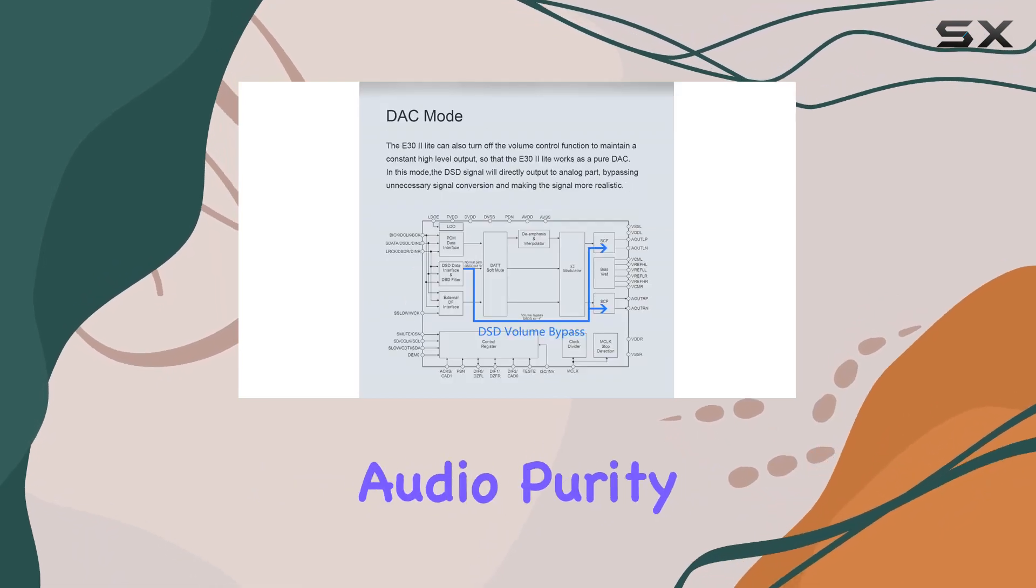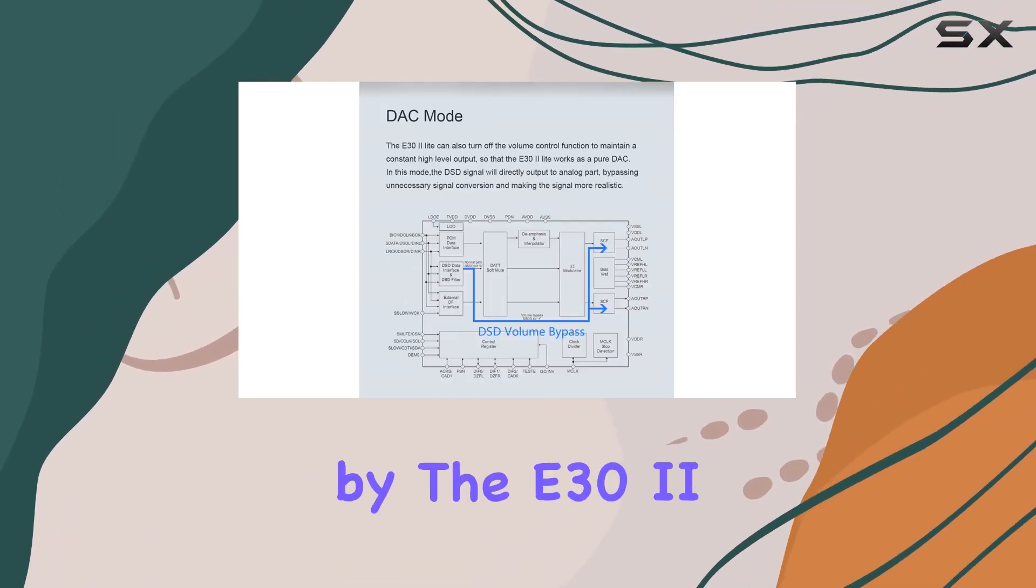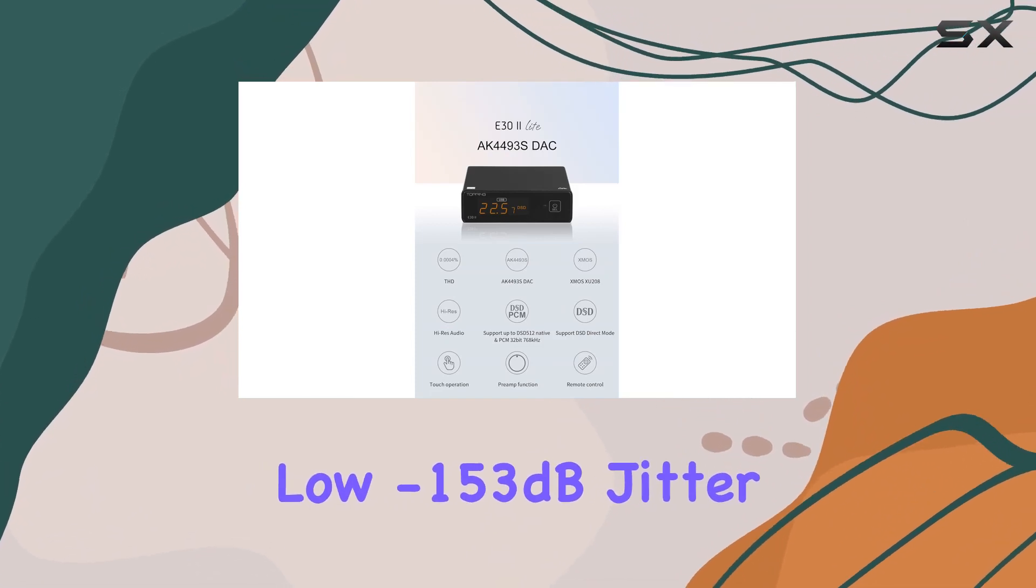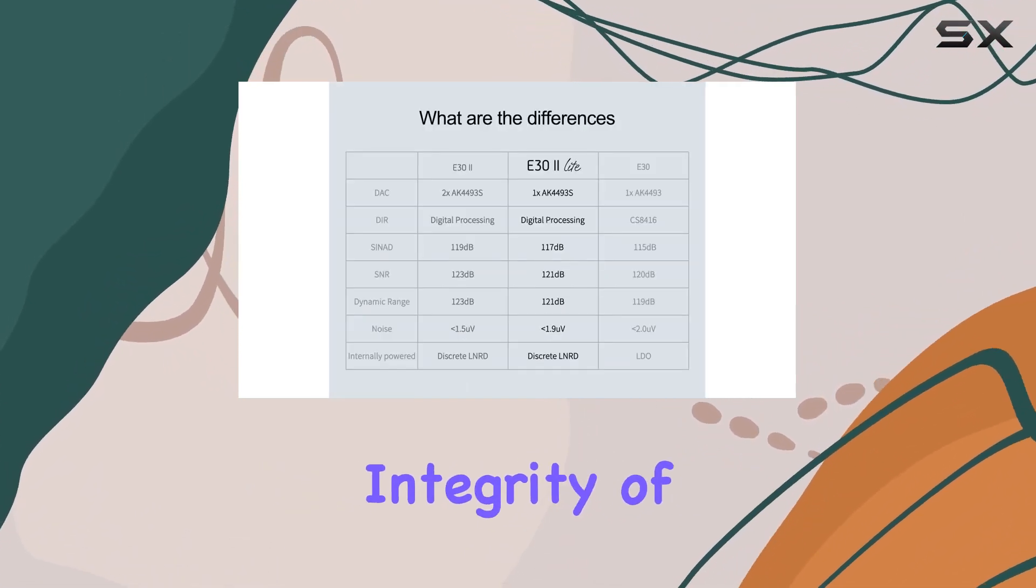Jitter, the enemy of audio purity, is vanquished by the E32 Lite, boasting an impressively low -153 dB jitter, preserving the integrity of your sound.